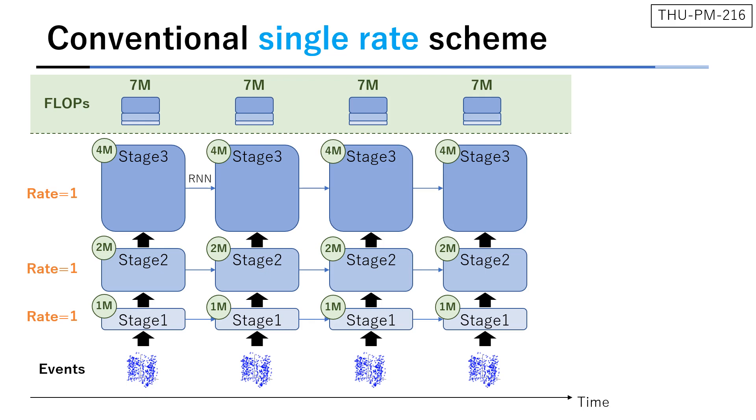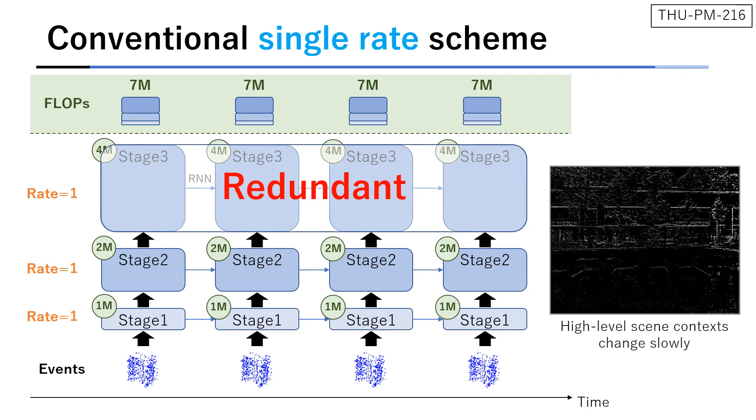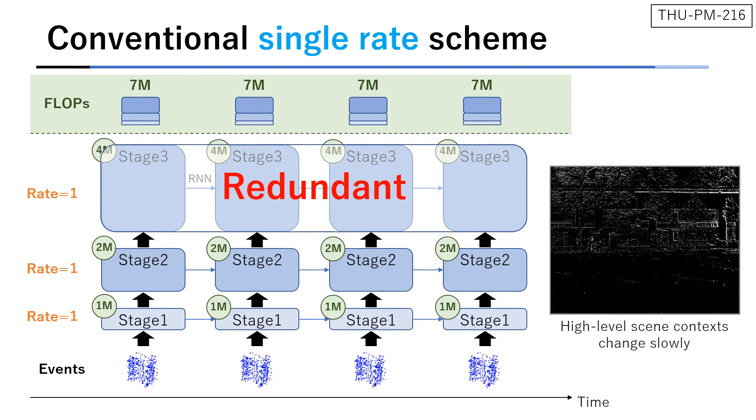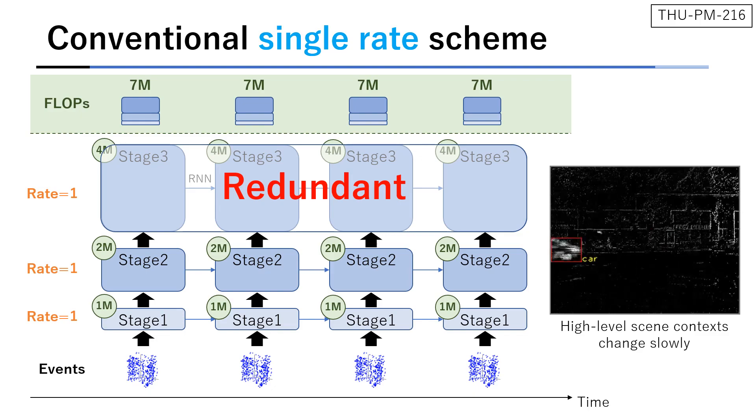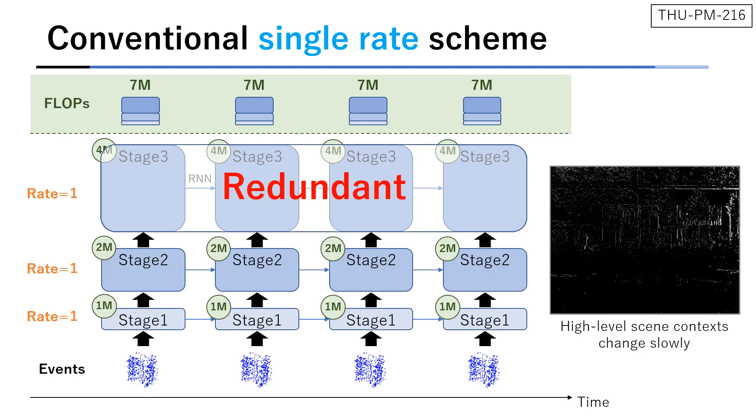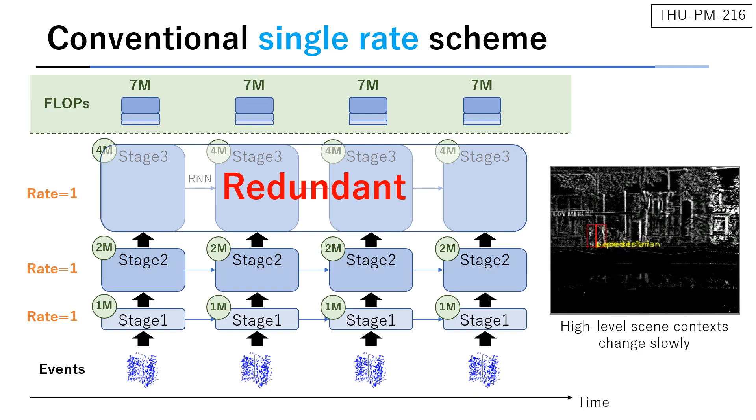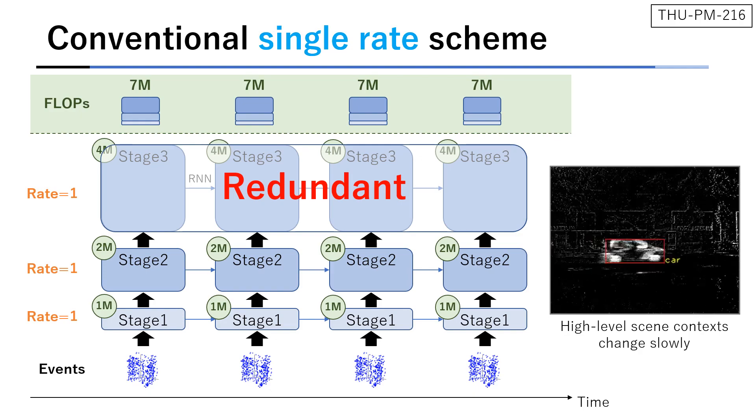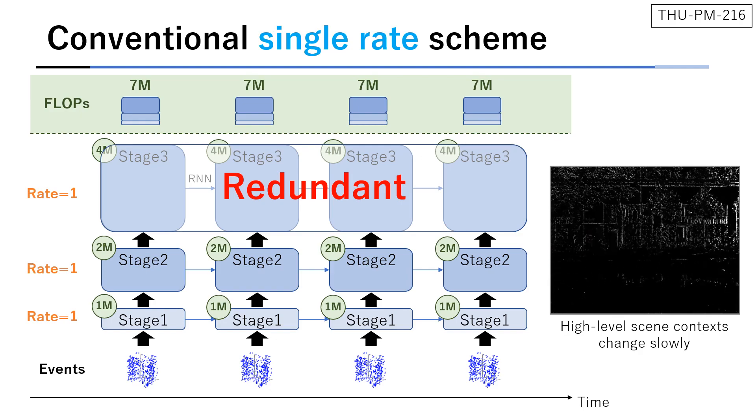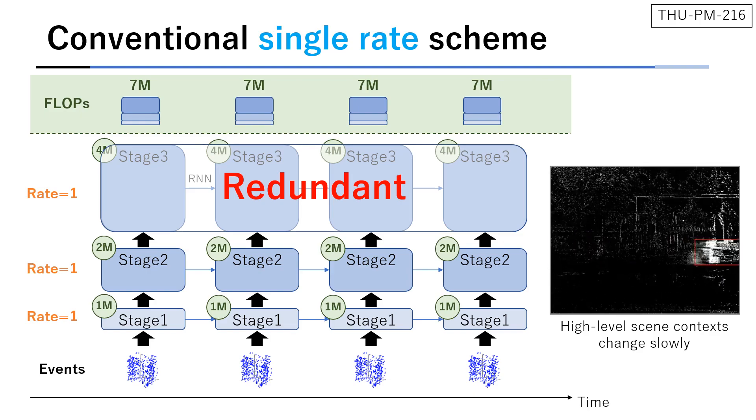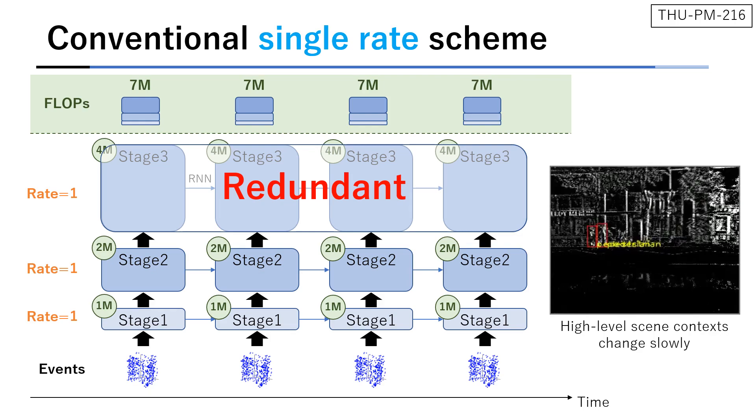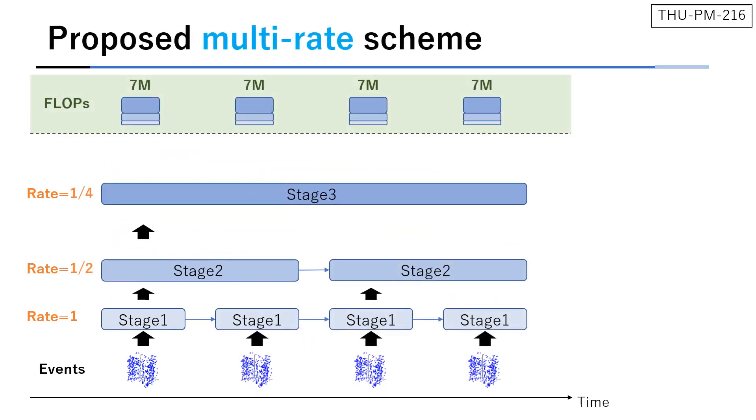A problem with the single rate design is the redundant computation at higher stages. In many cases, high-level scene contexts change slowly. For example, in the video, the car crosses the scene at high speed, but the other scene context is almost static. Despite that, the single rate network extracts the static contents at a high frequency with a large computational burden. The contents should be encoded at a proper temporal scale depending on their movement speed.